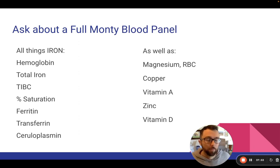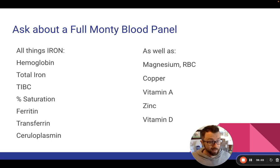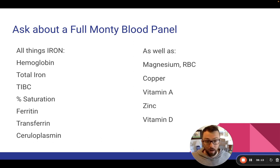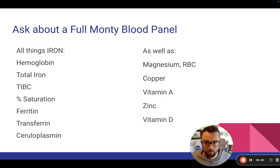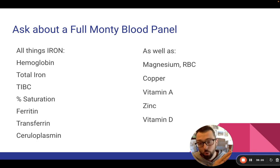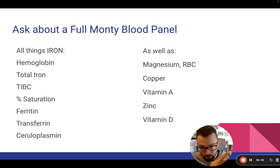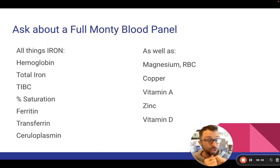The blood test I use as my gold standard for iron status is called the Full Monty blood panel. This is something you'll have to ask for on special request from your doctor — they are not going to volunteer it. I myself don't even go through my doctor; I order it independently and pay for it on my own. It is worth it, in my humble opinion. It measures all things related to iron: your hemoglobin, total iron, total iron binding capacity, percent transferrin saturation, ferritin levels, transferrin levels, and ceruloplasmin levels — you get all of that information.